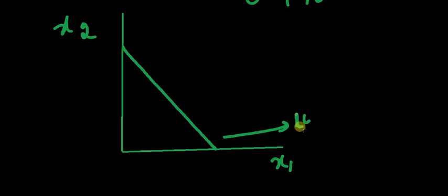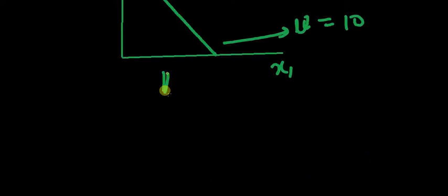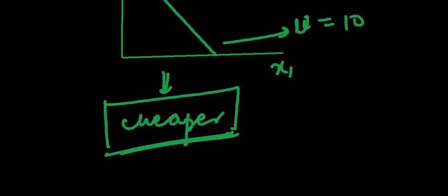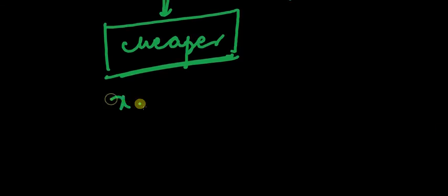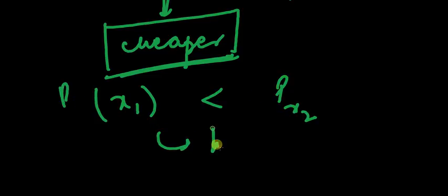This line represents a utility of 10. Since the consumer is not concerned about individual units — only the total quantity — what should he go for? He will go for whichever good is cheaper. We will discuss this more in the next chapter, but just to make the point: if the price of x1 is less than the price of x2, he should buy all of good 1.